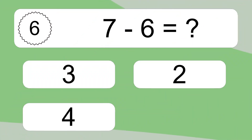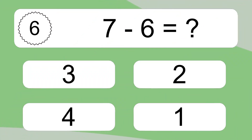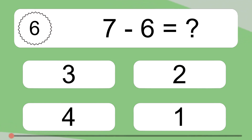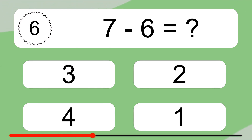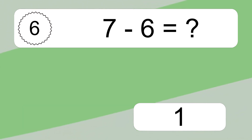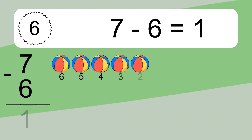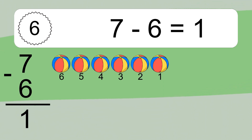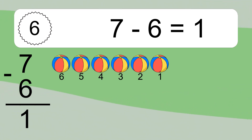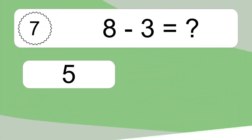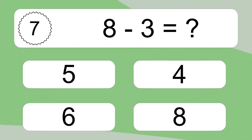7 minus 6 equals what? 7 minus 6 equals 1. Let's count it: 6, 5, 4, 3, 2, 1.